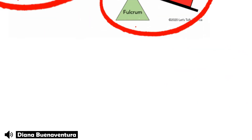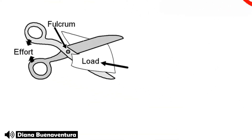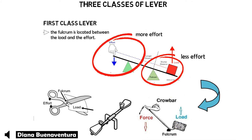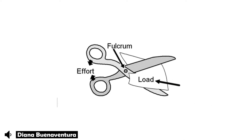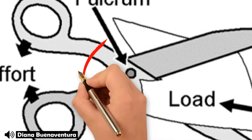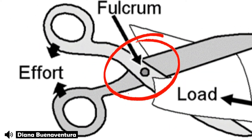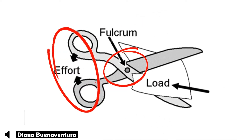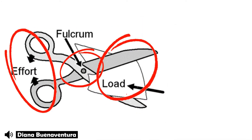Examples of first class levers are scissors, teeter-totters, and crimpors. First class levers are very useful for lifting large loads with little effort. In scissors, the fulcrum is the pivot in the middle, the force or input is applied by the person using the scissors, and the item being cut has the output force applied to it.